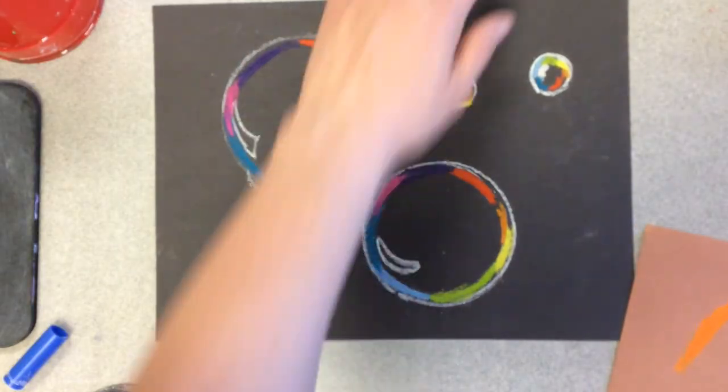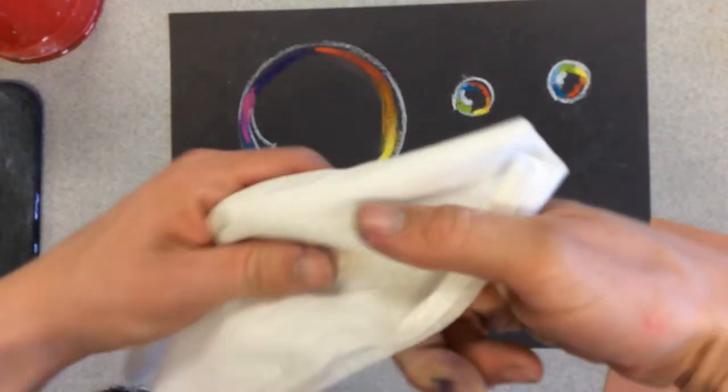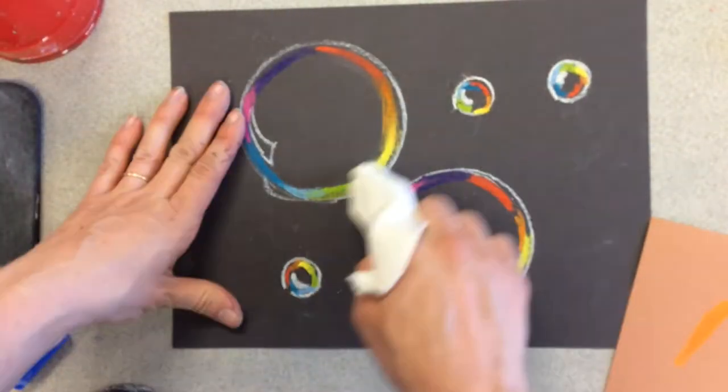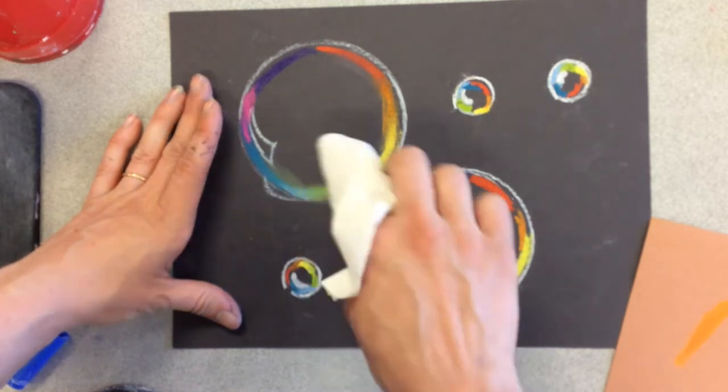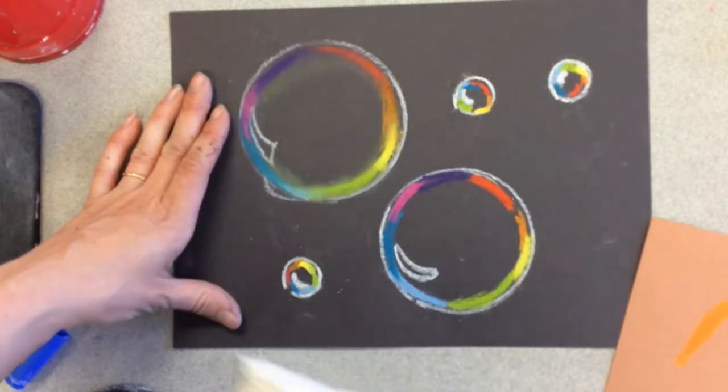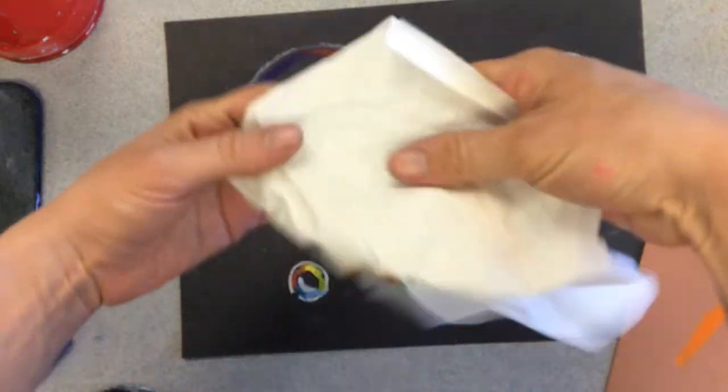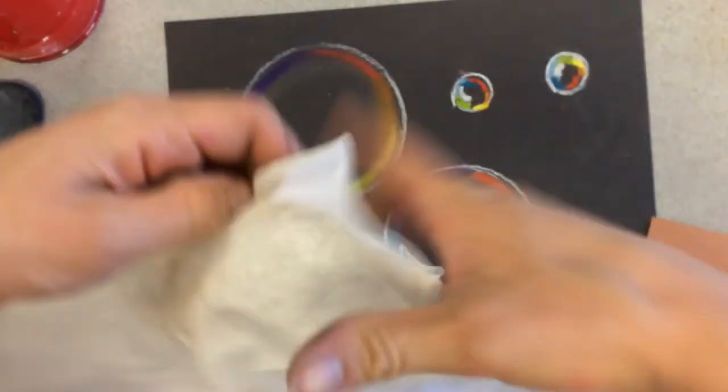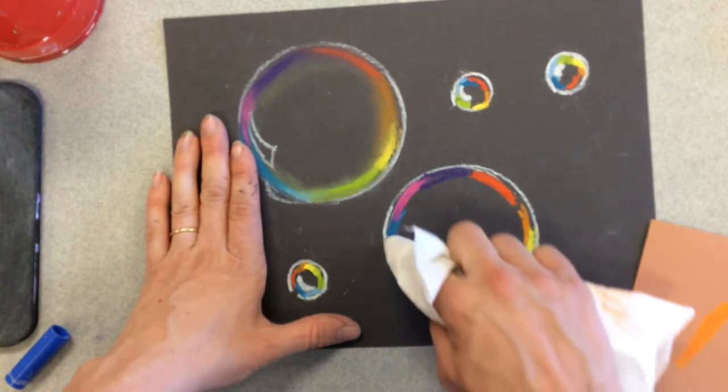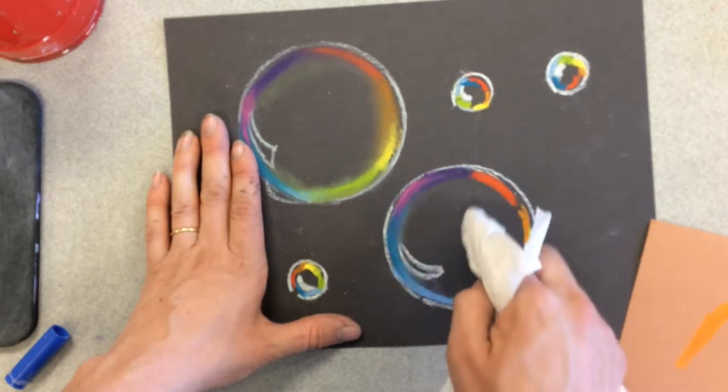Okay now that I've filled in my rainbow take your fingers wrap it in a paper towel to soften your edge. Dry paper towel not a wet wipe for this. You can see it softened it all up and before I go to my next bubble. I'm going to rewrap my finger in a clean section.